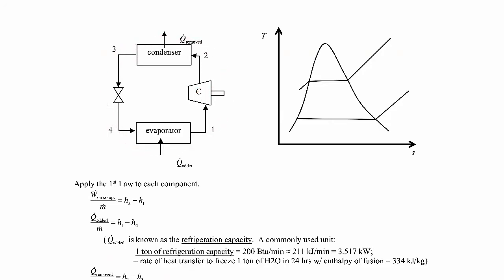What we have is a compressor. State one comes out of an evaporator, goes through a compressor that puts energy into the fluid, so we have some power going in. Then we come out of that compressor and go through a condenser where we remove some heat into a hot reservoir. Then we go from the condenser through a throttling valve, which drops the pressure and temperature considerably, then into an evaporator where we pick up energy from our cold reservoir. Then we repeat the cycle.